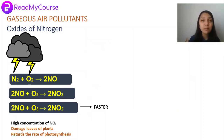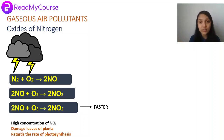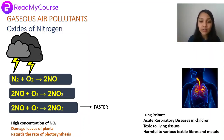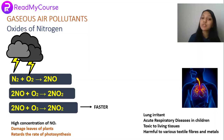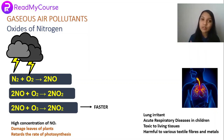Higher concentrations of NO2 damage plants and retard the rate of photosynthesis. For human beings and animals, NO2 is a lung irritant and causes acute respiratory diseases in children. It is also toxic to living tissues and harmful to various textile fibers and metals.